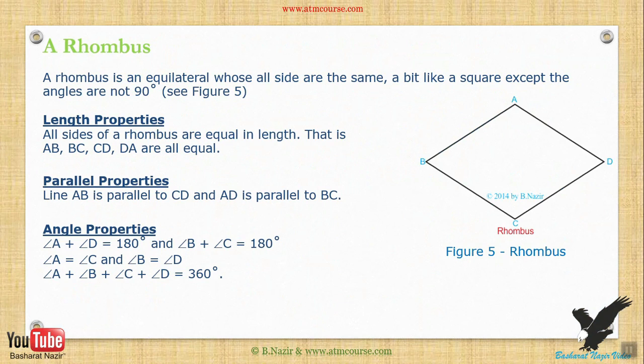Properties of a rhombus: a rhombus is a shape whose all sides are the same — a bit like a square, except the angles are not 90 degrees. See figure 5. Length properties: all sides of a rhombus are equal in length — AB, BC, and CD are all equal. Parallel properties: line AB is parallel to CD, and AD is parallel to BC. Angle properties: angle A plus angle B equals 180 degrees. Angle A equals angle C, and angle B equals angle D. Angle A plus angle B plus angle C plus angle D equals 360 degrees.